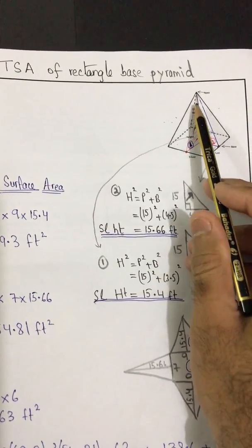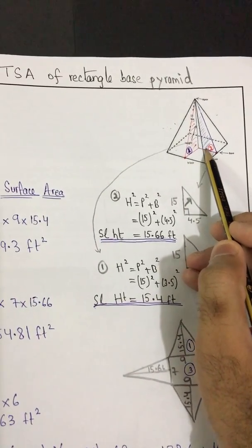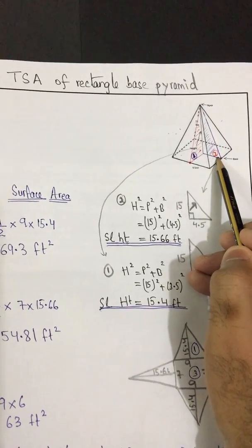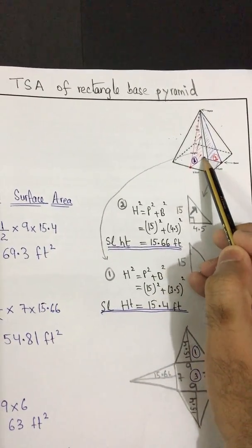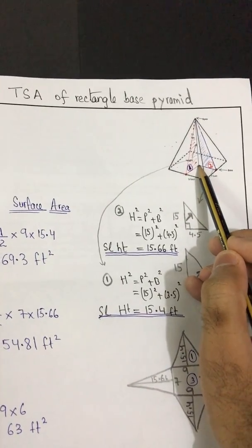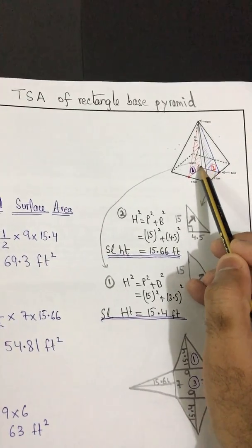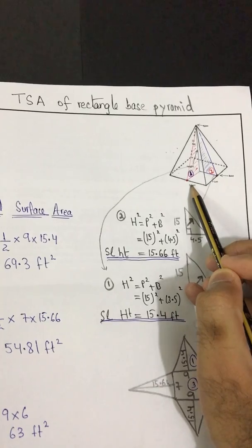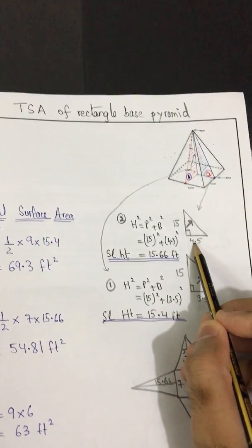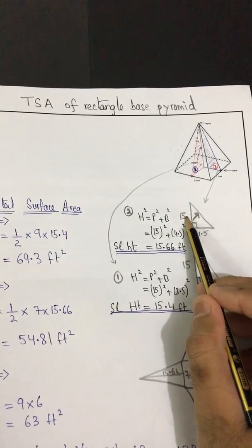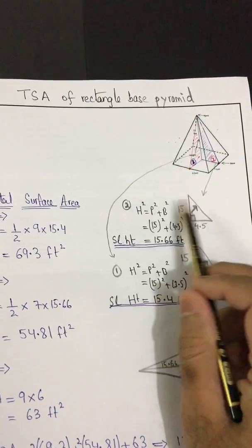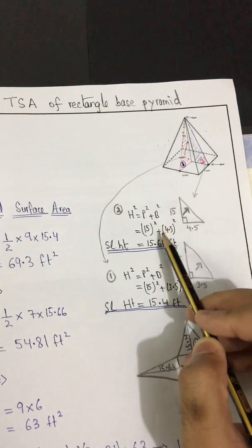So there will be only two slant heights. For triangle number two, the perpendicular is 15. The base is half of this length — since this side is 9 feet and this is a right pyramid, the distance from the center is half of 9, which is 4.5. Applying Pythagoras theorem gives slant height number two as 15.66 feet.